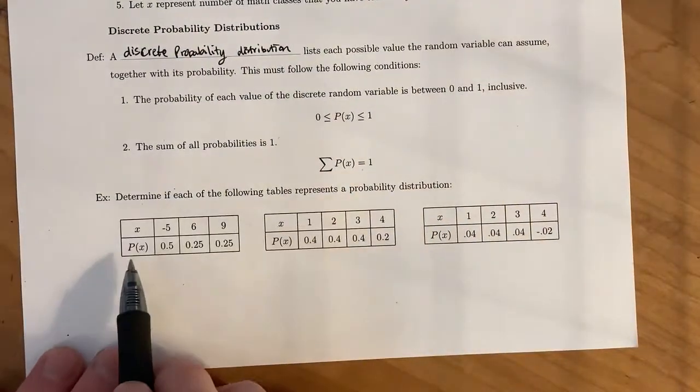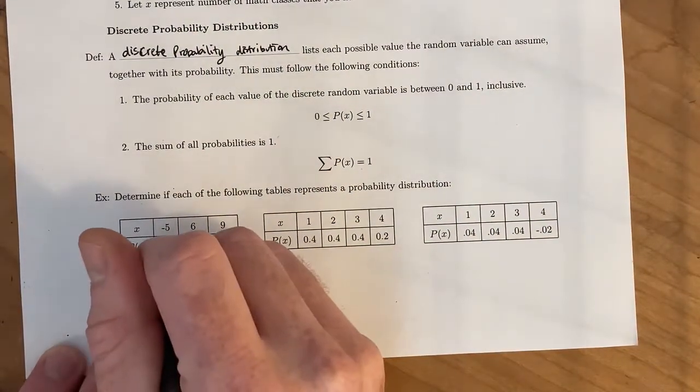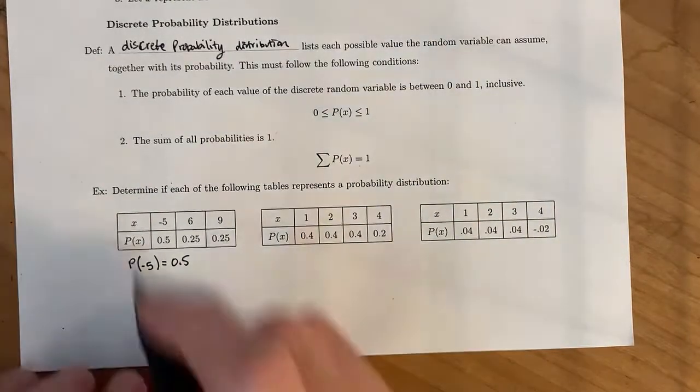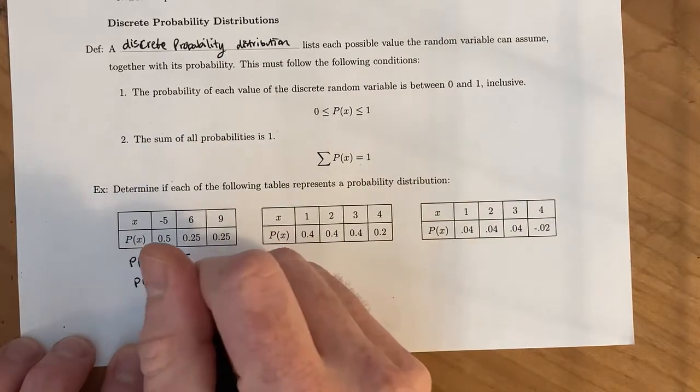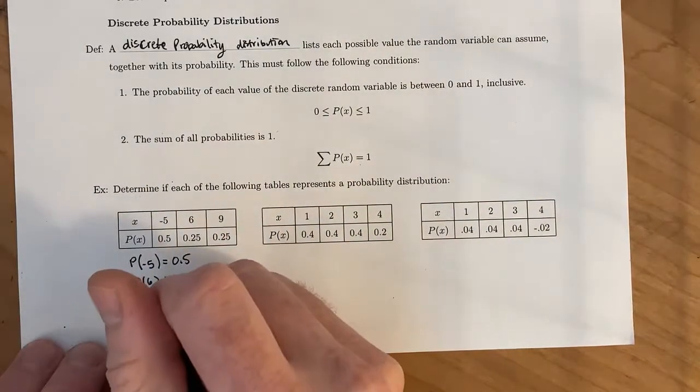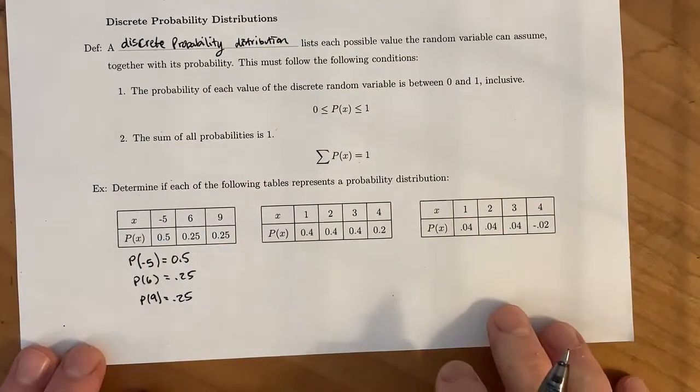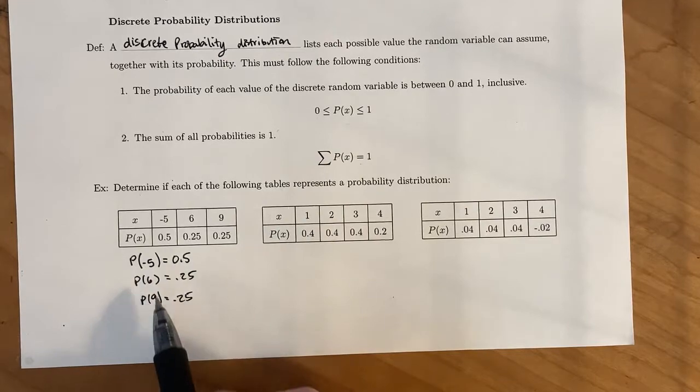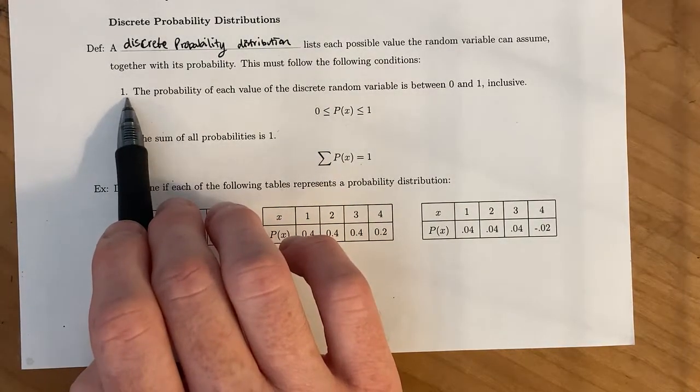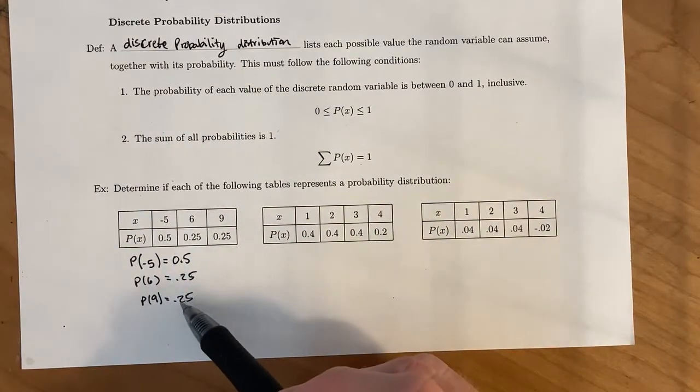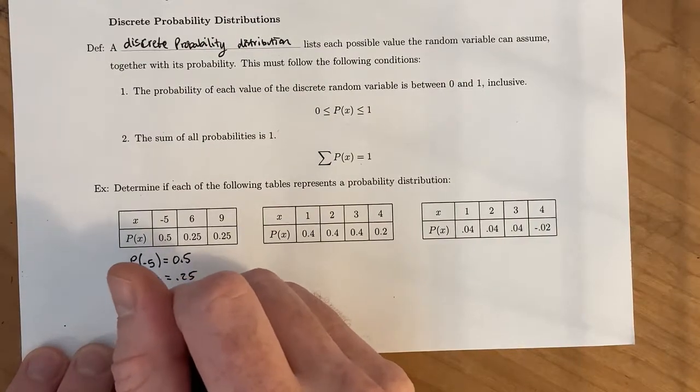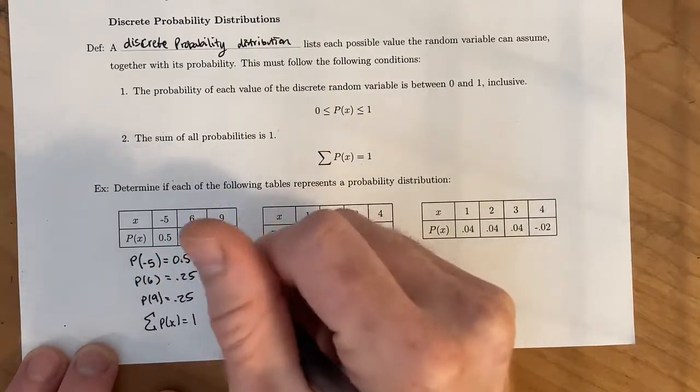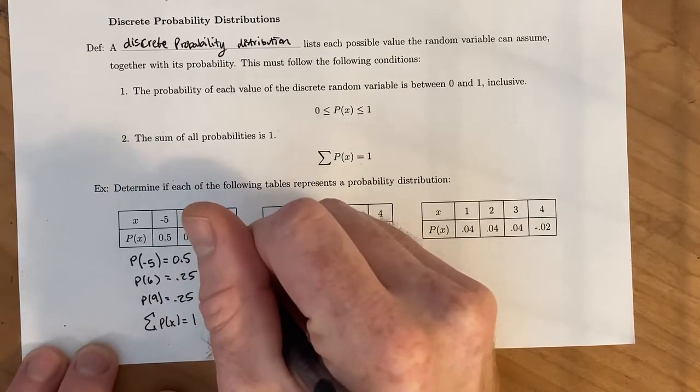So if we look over here, p of, here's how we can read this, p of negative 5 is equal to 0.5, which is between 0 and 1. That's good. P of 6 is equal to 0.25, which is again between 0 and 1. And if we do p of 9, that gives us 0.25 as well. So the three random variables, negative 5, 6, and 9, all have a probability that lands between 0 and 1. So number one works. And then for number two, if we take 0.5 plus 0.25 plus 0.25, essentially take the sum, we end up getting 1. So that tells us that this one is a probability distribution. And so we'll just say yes here.